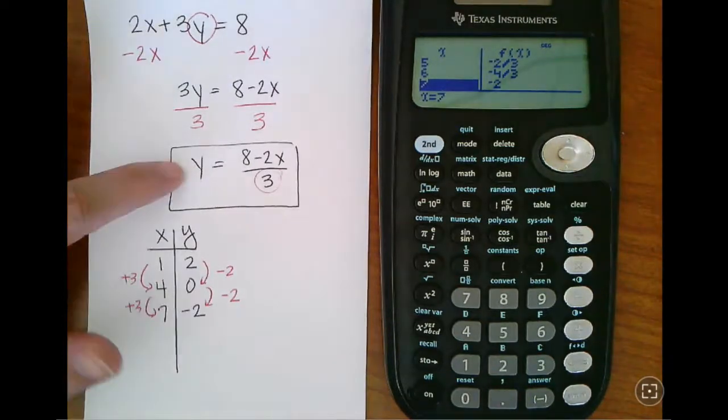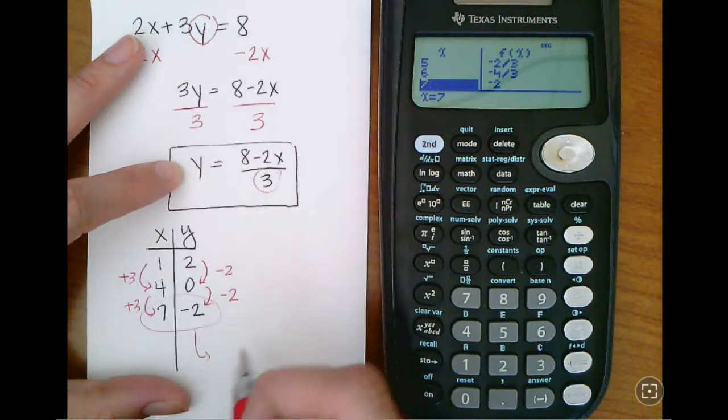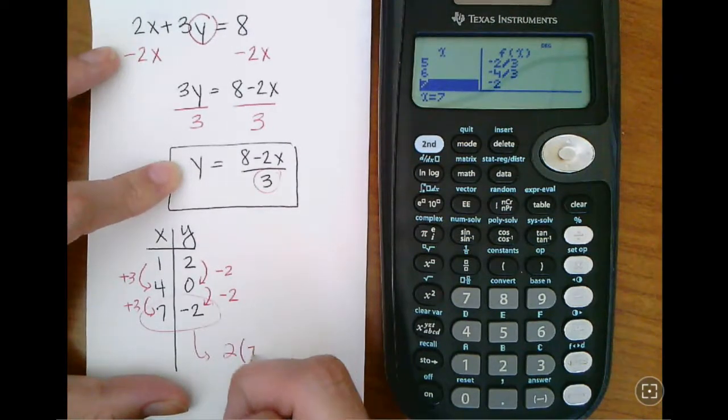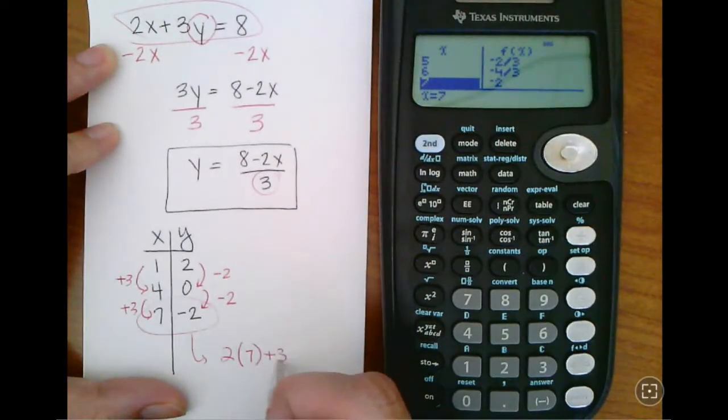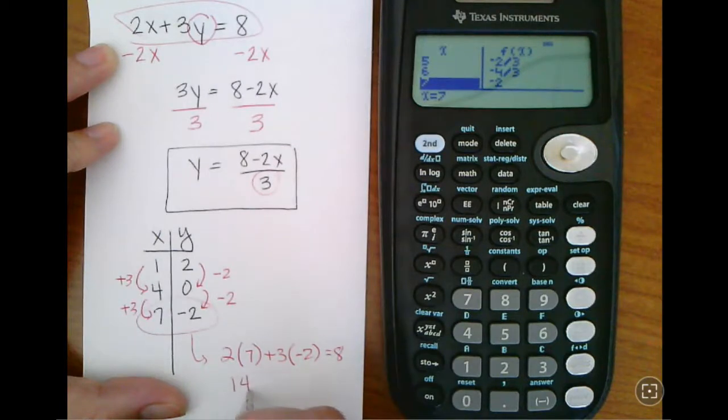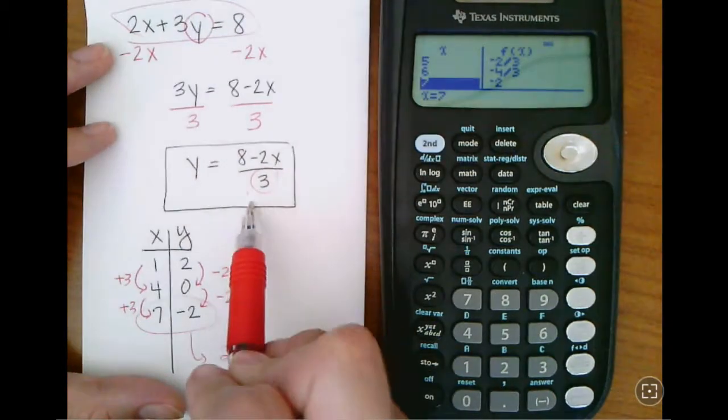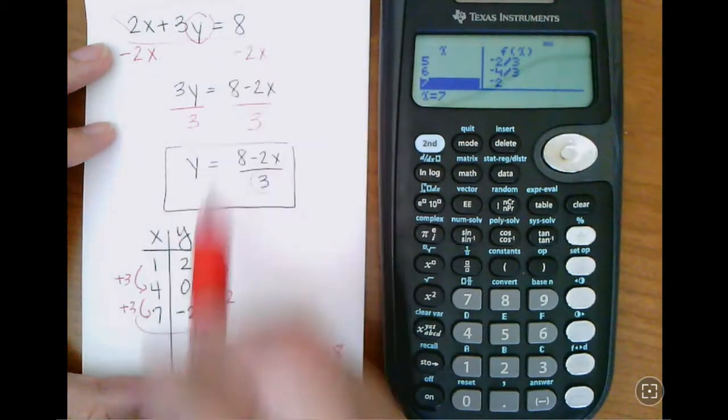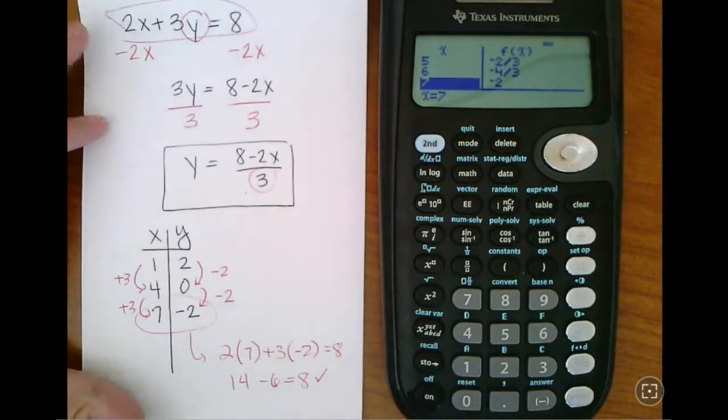If we wanted to check that our solution here was right, we would just take any one of these values here and plug it back into the original. 2 times 7 plus 3 times negative 2 equals 8. 14 minus 6 equals 8, which is true. So now I feel pretty good that the solution to this was the same as the solution to that. So I don't think I screwed anything up. This looks like it's the right thing, and I can go ahead and start doing my graph.